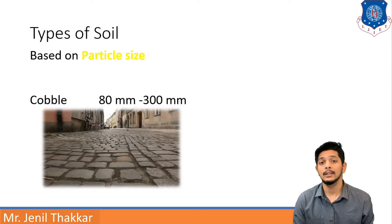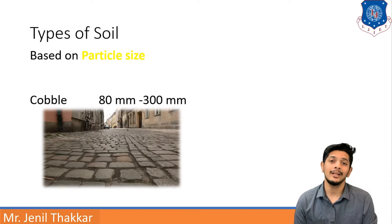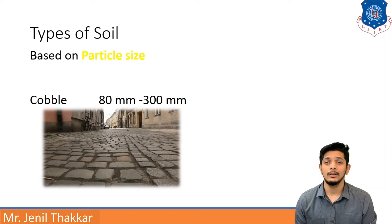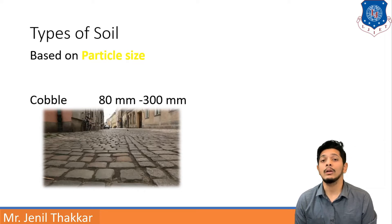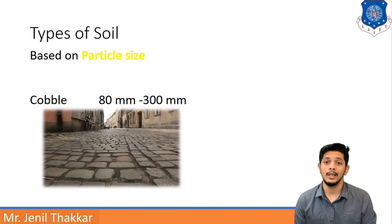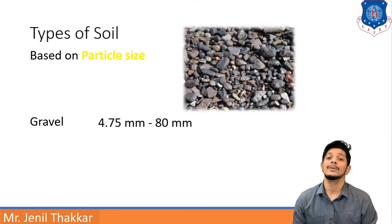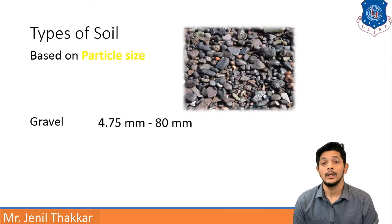Moving further, cobbles range from 80 mm to 300 mm in diameter. Cobbles are used to construct pavement ways or walkways on streets and are a comparatively economical option.